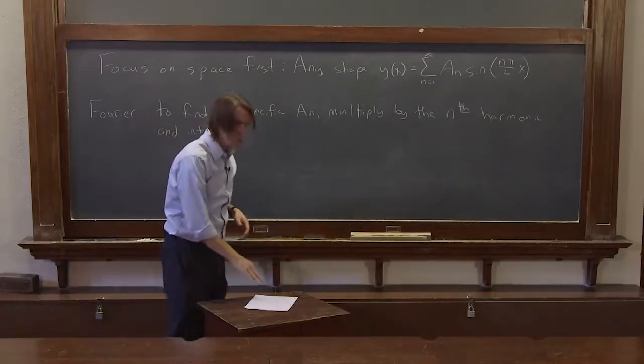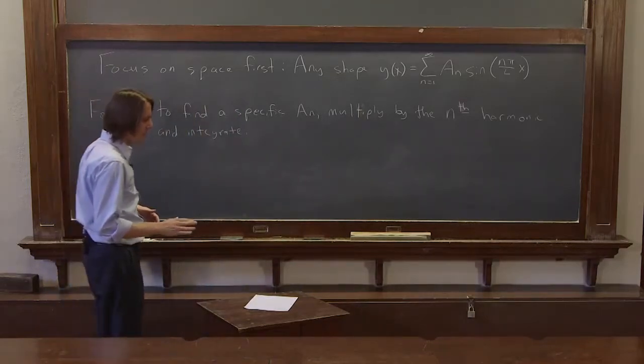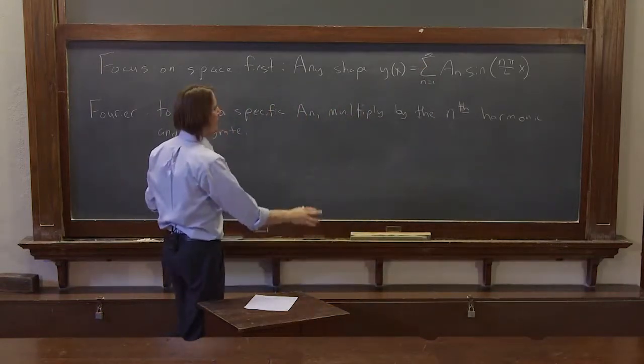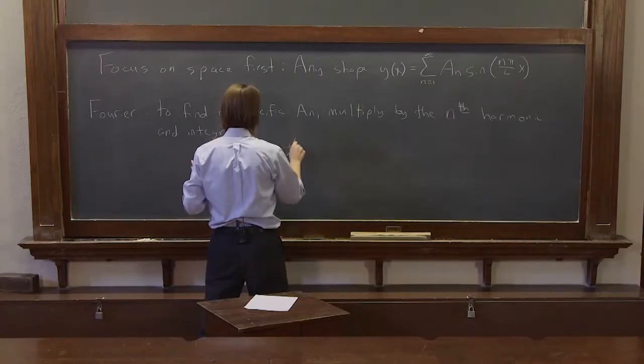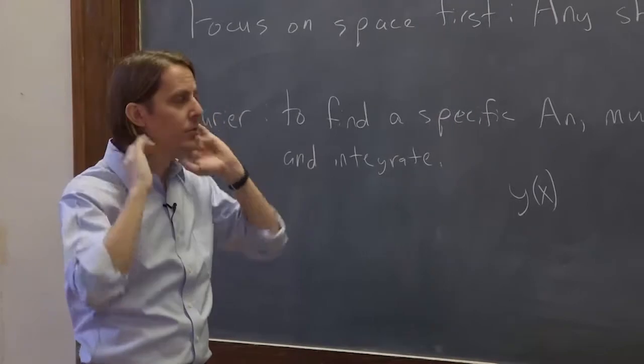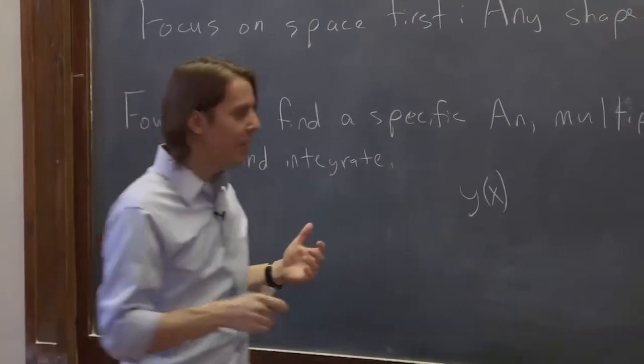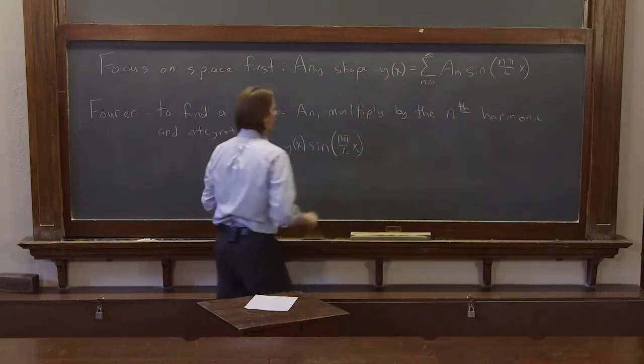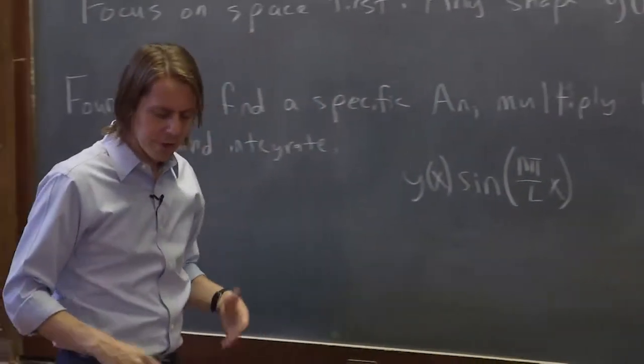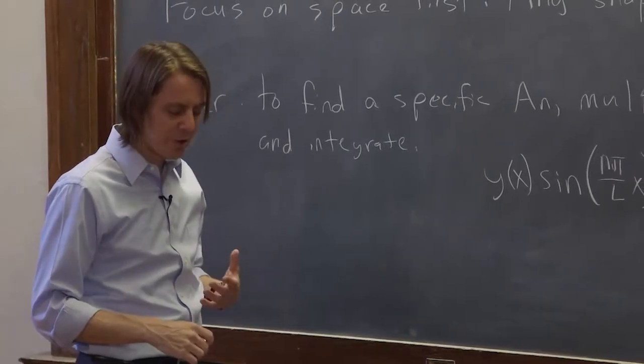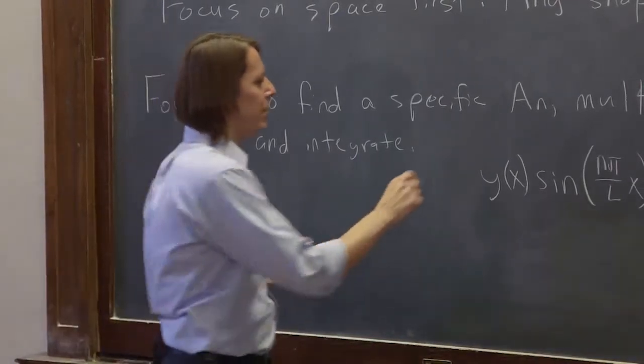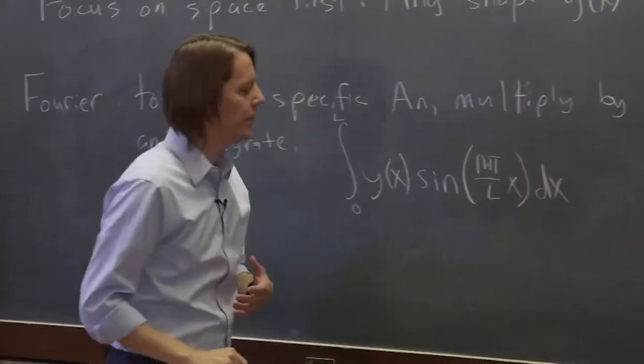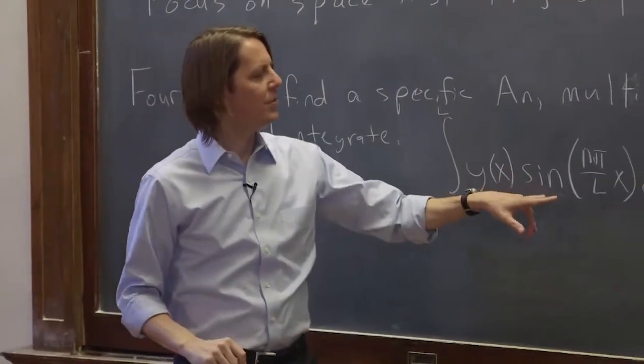Joe Fourier says that that will help. So let's write that out and see what that looks like. So both sides, we're going to multiply by the nth harmonic and then integrate. So what does that mean? Well, first let's just write y of x. That's the function that we're trying to describe with a Fourier series. So multiply by the nth harmonic means multiply by sine n pi over l x. Really, this is a harmonic. Any of these sine n pi over l x, cosine n pi over l x, those are harmonics. And then integrate means integrate over the domain, from 0 to l. And if you integrate, you have to have a dx over here.